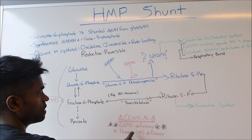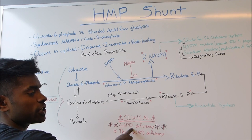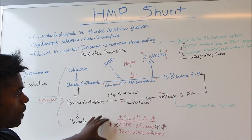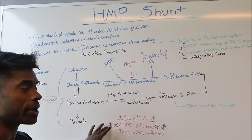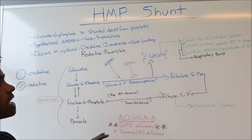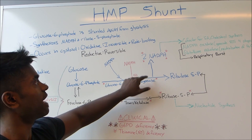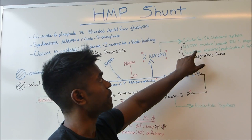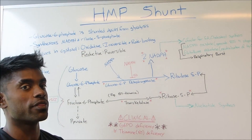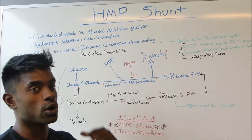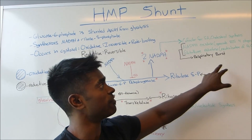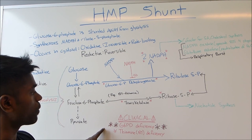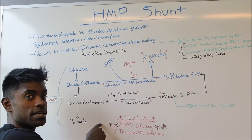Now we can look into clinical cases. G6PD deficiency is very high yield because it's the most common human enzyme deficiency. The main outcome of G6PD deficiency is hemolysis of red blood cells. If you don't have G6PD, you won't have NADPH, and red blood cells need NADPH to reduce glutathione. As mentioned in the respiratory burst video, glutathione is required to get rid of H2O2, so if H2O2 remains, it causes damage to the cell and therefore hemolysis.